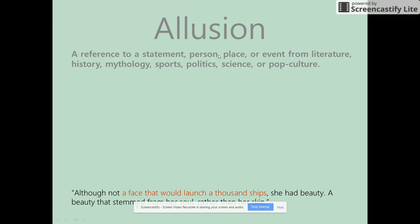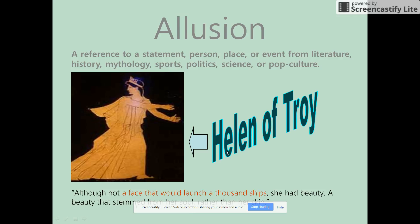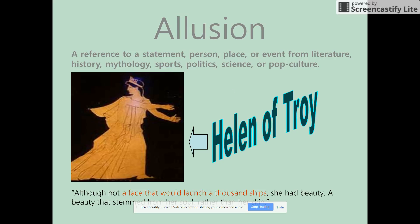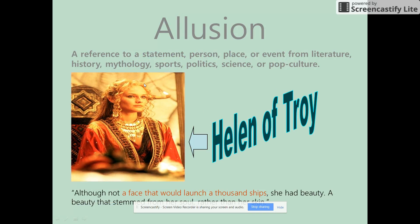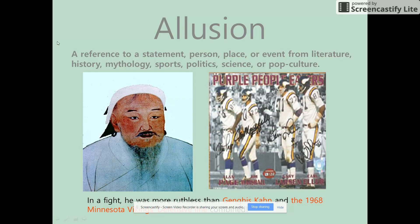For example: "Although not a face that would launch a thousand ships, she had beauty — a beauty that stemmed from her soul rather than her skin." That phrase in red is a reference to Helen of Troy, because the story goes that when she ran off with her boyfriend, her husband got a thousand ships together and took them to Troy, starting the Trojan War. Another example: "In a fight he was more ruthless than Genghis Khan and the 1968 Minnesota Viking defense line combined" — you'd need to know both references to understand how ruthless this person is.